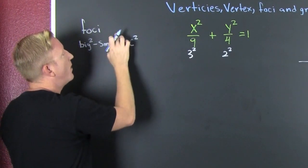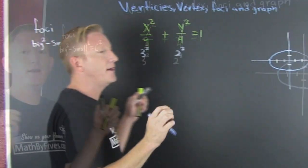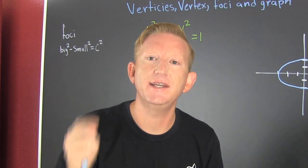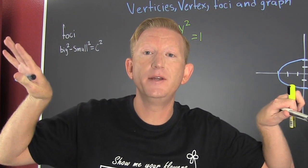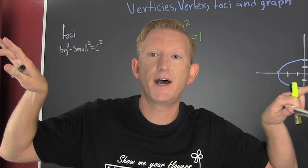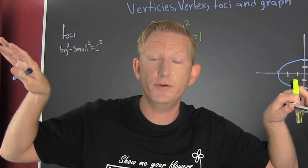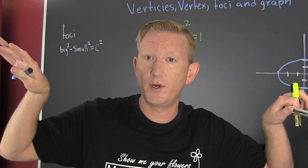It's going to be the big squared minus the small squared is the c squared. Now I know the focus is in the hyperbola also, but notice in the hyperbola the foci lie on the outside. That's why it's big squared plus small squared.